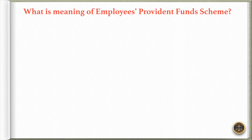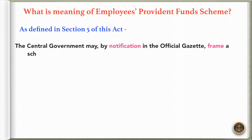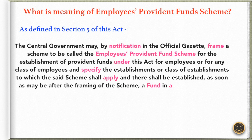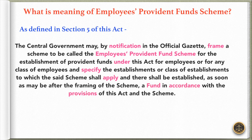What is the meaning of Employees Provident Fund Scheme? As defined in Section 5 of this act, the central government may, by notification in the official Gazette, frame a scheme to be called the Employees Provident Fund Scheme for the establishment of provident funds under this act for employees or for any class of employees, and specify the establishments or class of establishments to which the said scheme shall apply. There shall be established, as soon as may be after the framing of the scheme, a fund in accordance with the provisions of this act and the scheme.